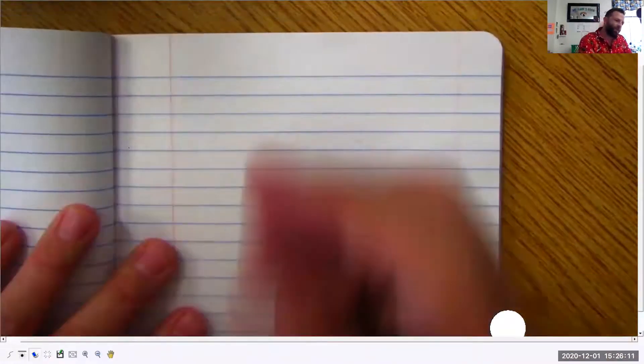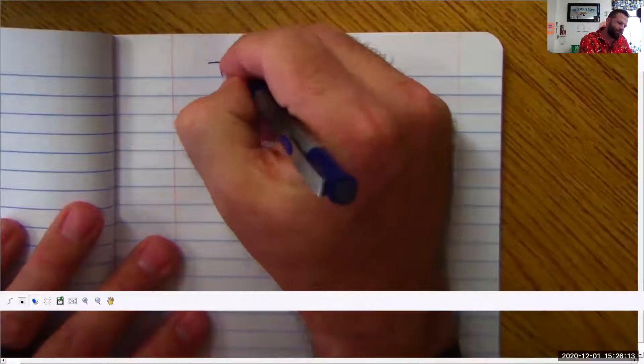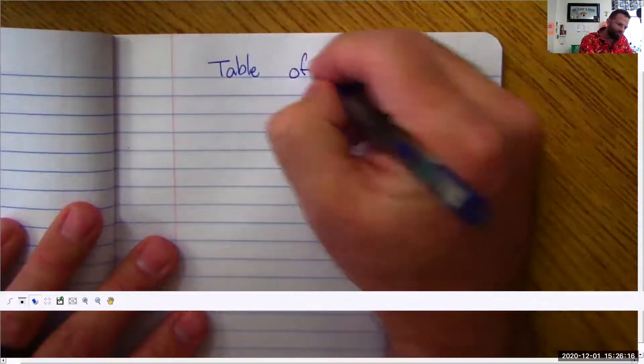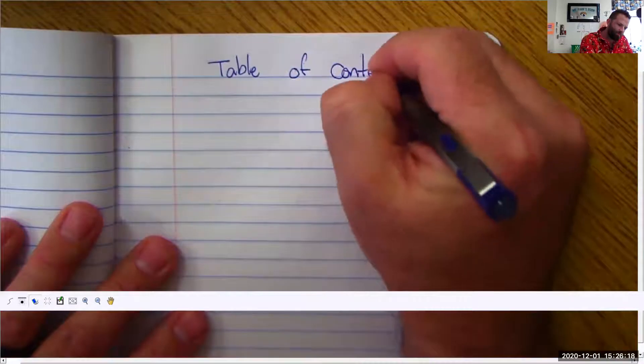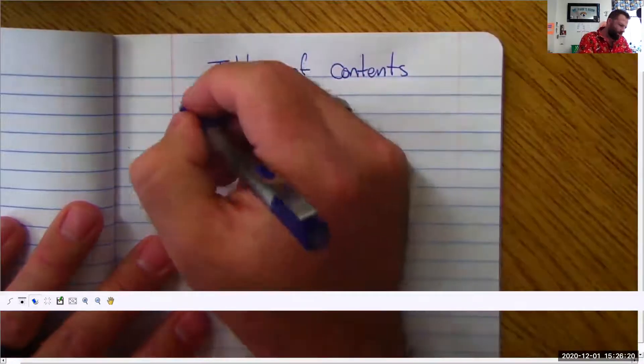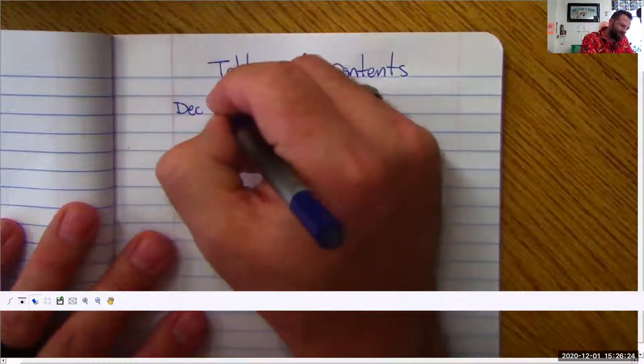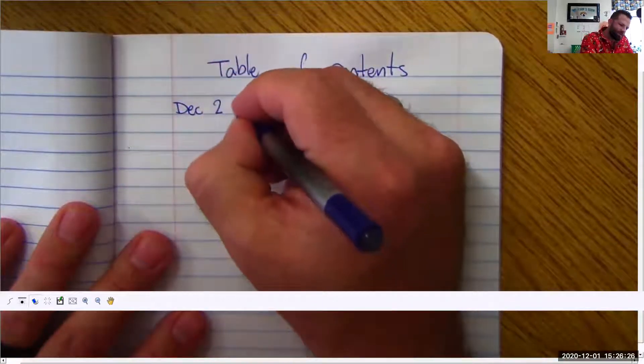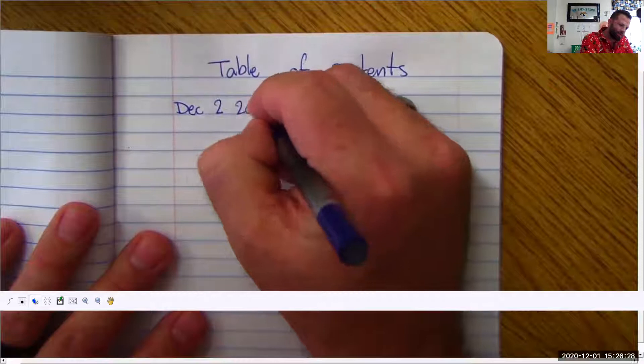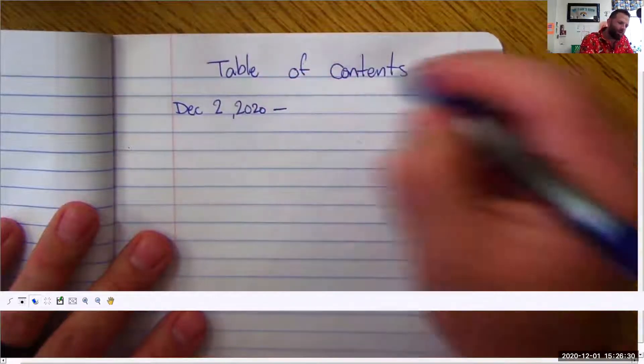Let's update the first page as table of contents and we're going to put down today's date, December 2nd of 2020, and we're going to talk about what is a rule.